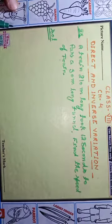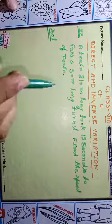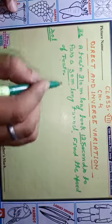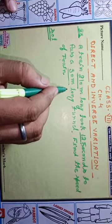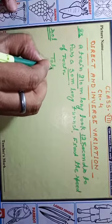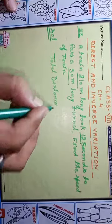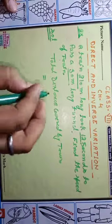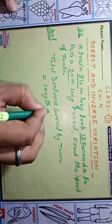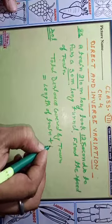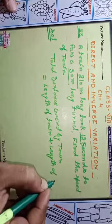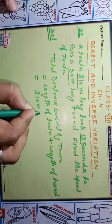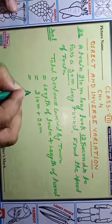Now let's see an example related to trains. A train 210 meters long took 12 seconds to pass a 90-meter long tunnel. Find the speed of the train. Since the train crosses a tunnel, the total distance covered by the train equals the length of the train plus the length of the tunnel: 210 meters plus 90 meters equals 300 meters.